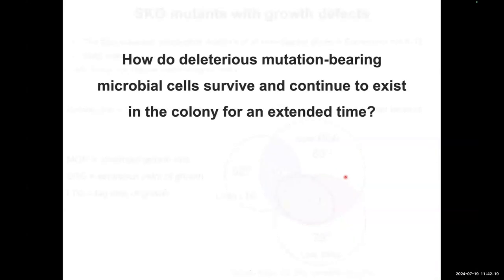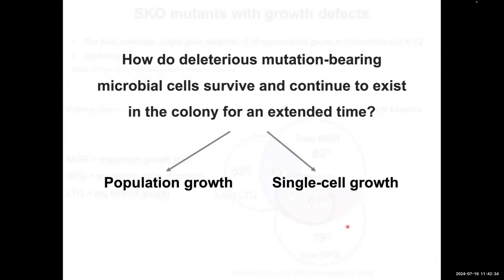The specific question we were interested in is how these mutation-bearing cells can survive and continue to exist for extended time. We took two different approaches to answer this: first measuring population growth of different strains and their parameters, then looking at single cell growth. Today I'll mostly talk about single cell growth of one of these mutants, but I'll start with a bit about population growth.